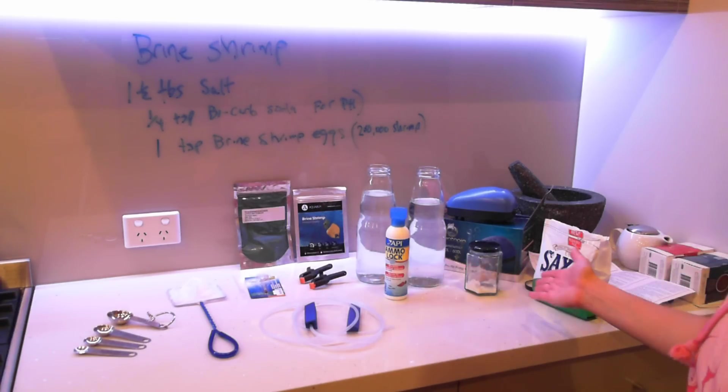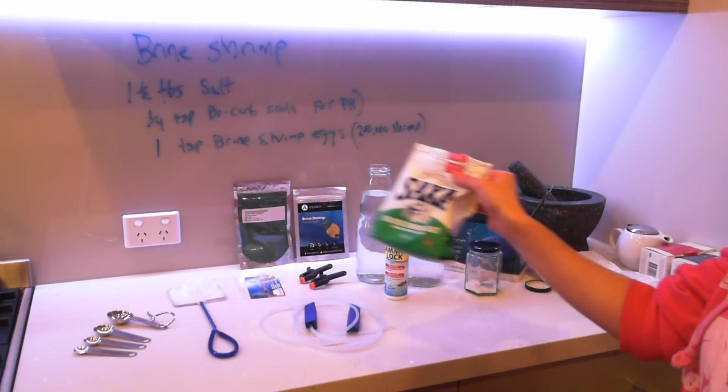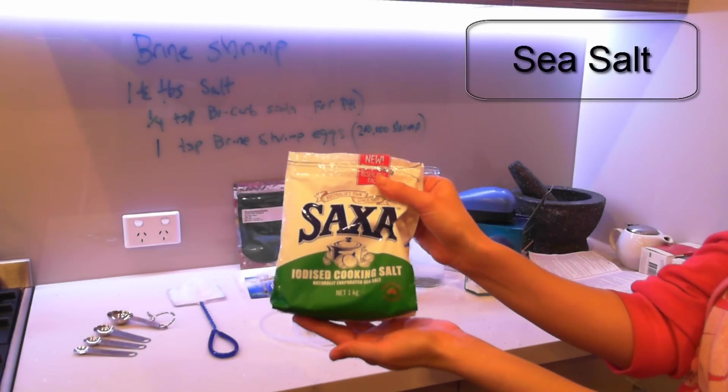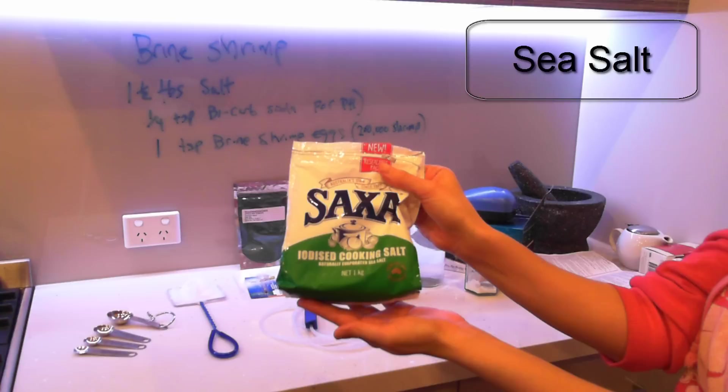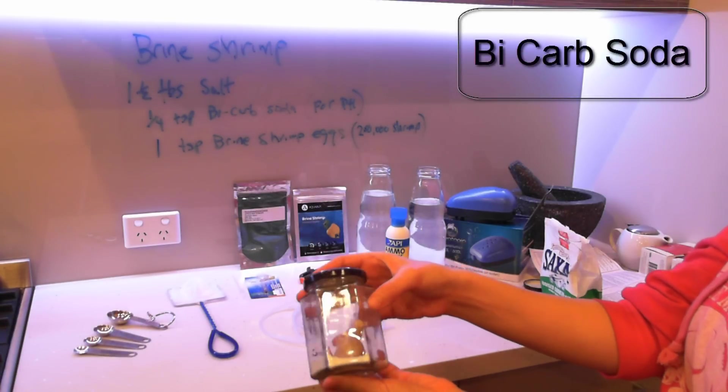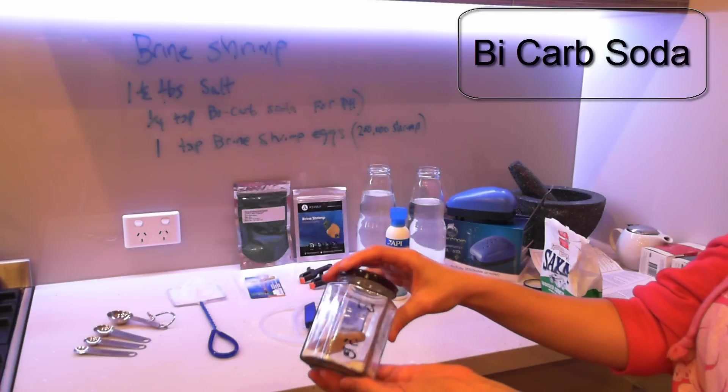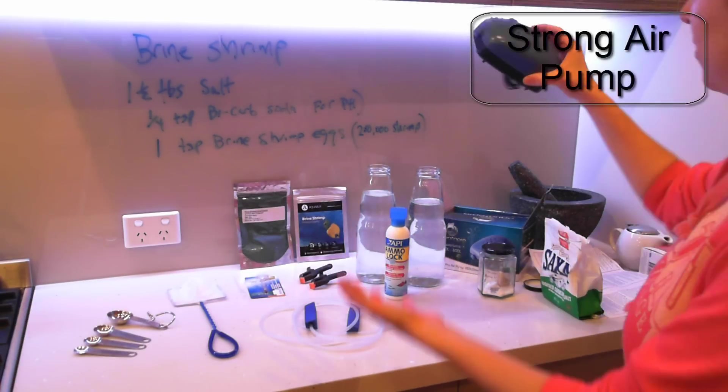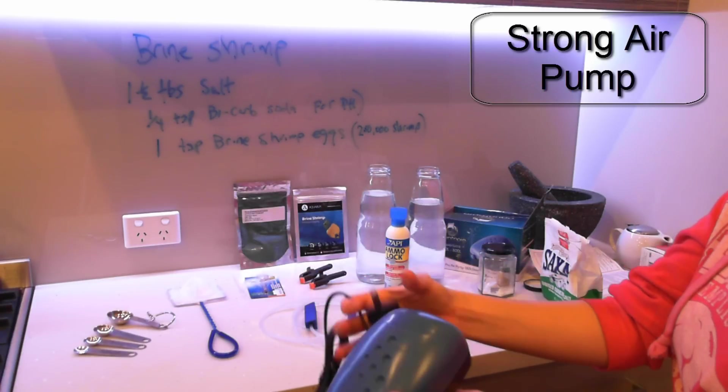I'm going to be taking you through some of the ingredients and equipment we're going to be using today. I just have some iodized salt here. You can use the uniodized. That's totally fine. I've got some bicarbonate soda here. I just add this to raise the pH. You've just got your air pump here. That's just to create bubbles and circulation.